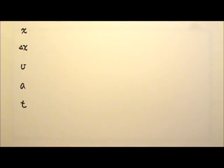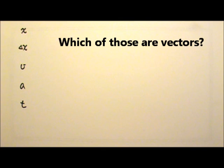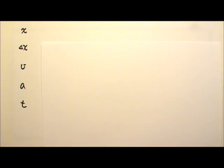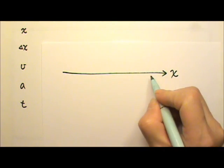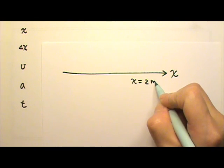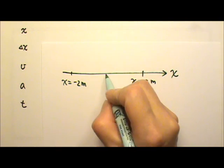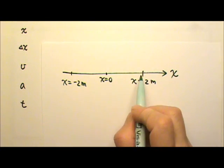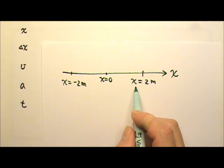Which of those are vectors? Four of those are vectors. Sometimes people forget that position is also a vector. Position is a vector because in a one-dimensional case, x equals 2 meters and x equals negative 2 meters are two different locations — one is 2 meters in the positive x direction from the origin, the other is in the negative x direction. So position is also a vector.